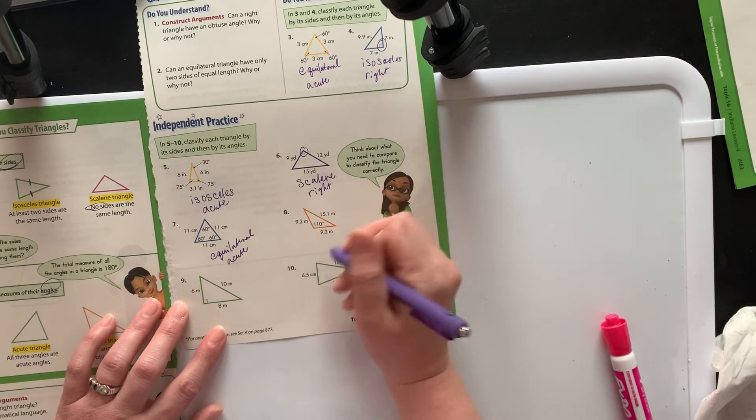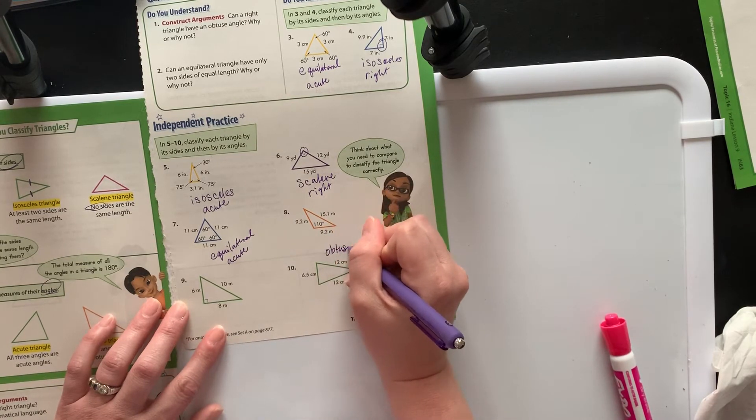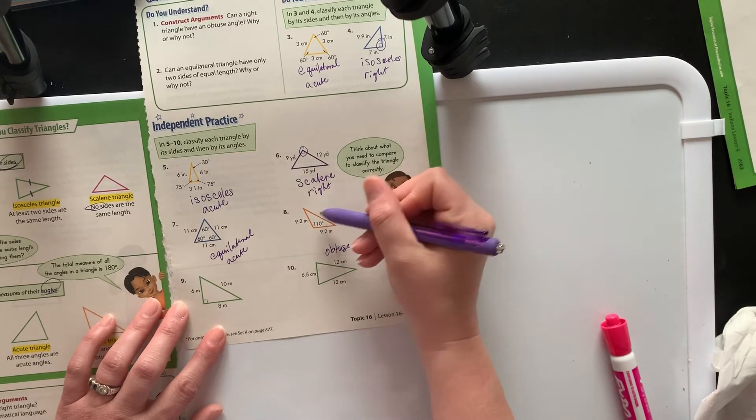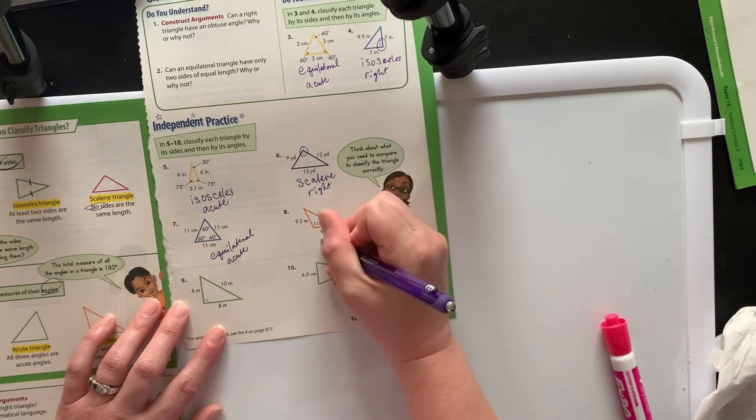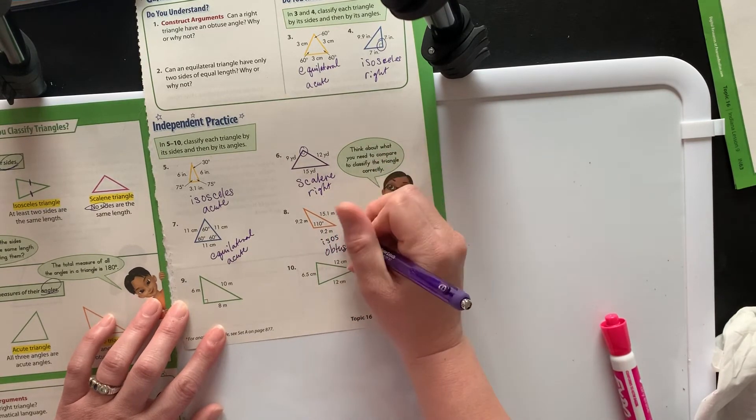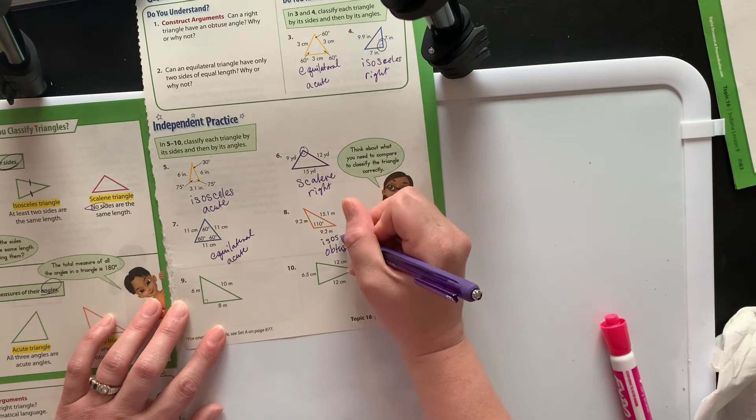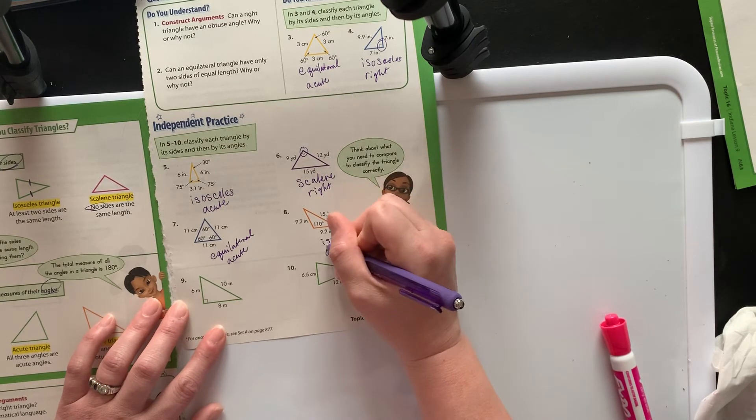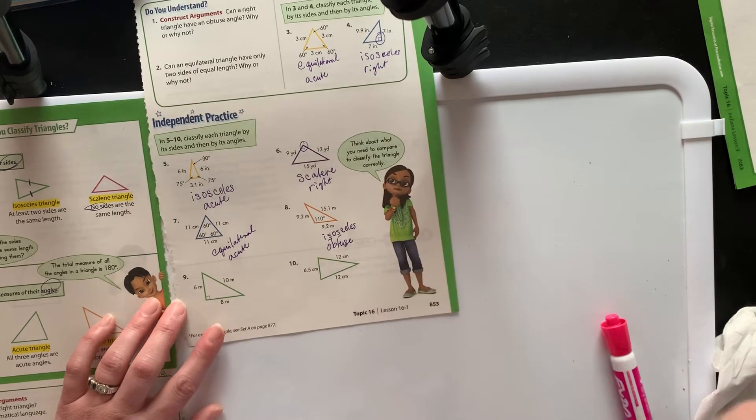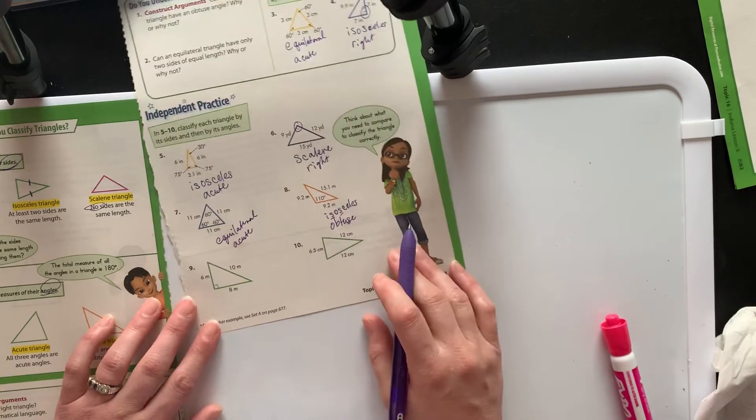For this one, we've got one obtuse angle, so I'm going to go ahead and write down that I know that that's going to be obtuse. And for my sides, 9.2 for both of them, so we're going to go isosceles. I always remember that isosceles is two sides because of the two S's. You can remember it however you want.